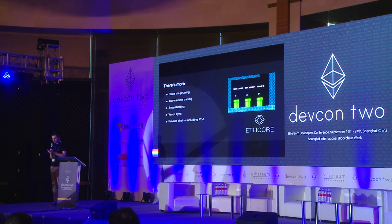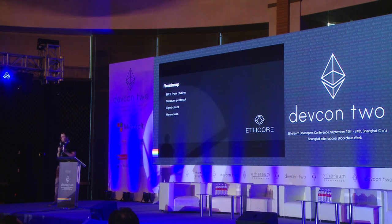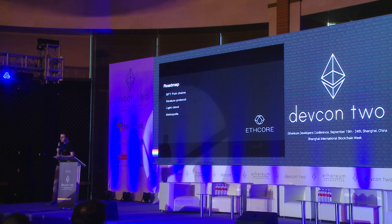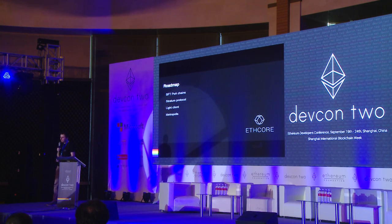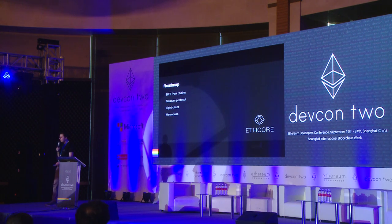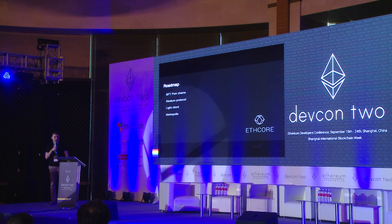There are a lot more features in Parity, but let me focus on what's about to come. The private proof of authority chains I mentioned are quite basic at the moment — we want to improve them by making them Byzantine fault tolerant, so you can have a full-blown industrial-grade permissioned blockchain solution built on top of that. Stratum protocol, something requested by our miners community, is also coming soon — it's a protocol to push block work notifications to miners over TCP. And of course, the Metropolis transition: as soon as the specification is ready, we'll start working on it and release it as soon as possible.